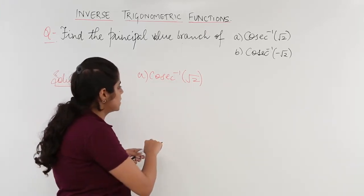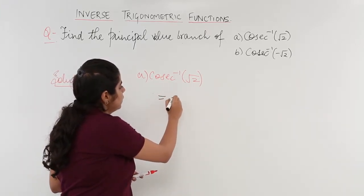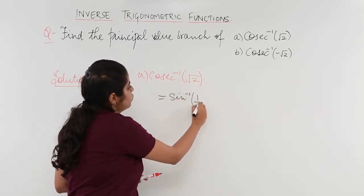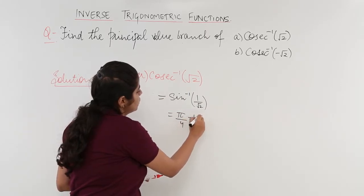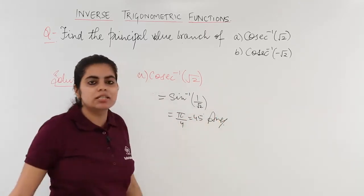So cosecant inverse root 2 is nothing but equal to sine inverse 1 by root 2, which equals pi by 4, which is 45 degrees, and this is the first answer.